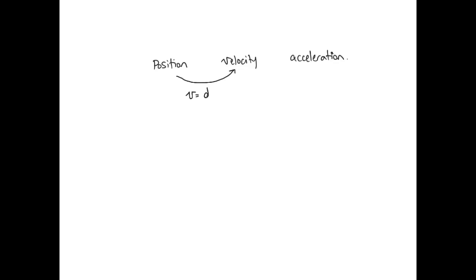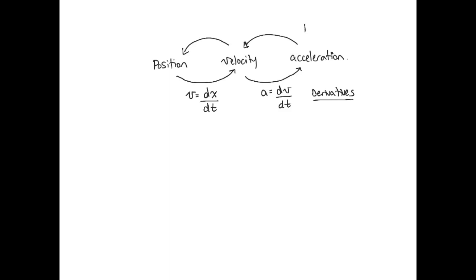If we know information about position and want to get velocity, the velocity is equal to the derivative of position with respect to time. Going from velocity to acceleration, acceleration is the derivative of velocity with respect to time. When we go backwards, we'll do the integral — integrating to get back to velocity, and integrating again to get back to position. So here we have derivatives going forward, and integrals going backward.